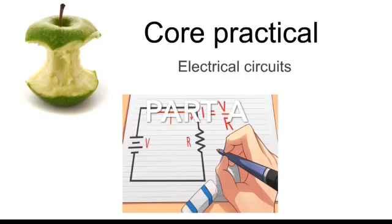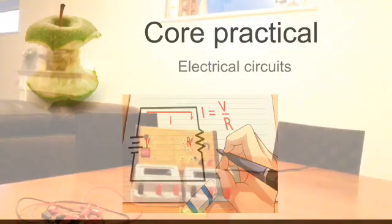There are a lot of little experiments in this Core Practical, and so this could potentially be a very long video. Therefore, I'm going to divide it into two parts. This video is part A, and we'll look at the experiments for resistance of a fixed resistor and a filament lamp.